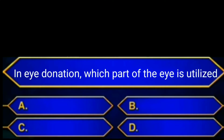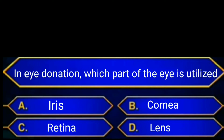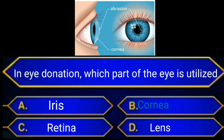In eye donation, which part of the eye is utilized? A. Iris, B. Cornea, C. Retina, D. Lens. Answer is option B: Cornea.